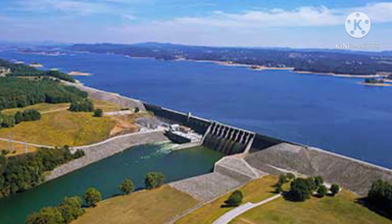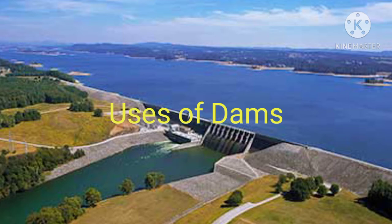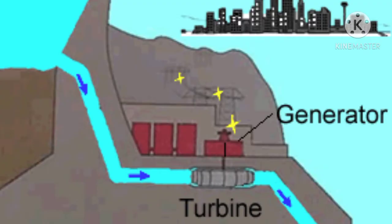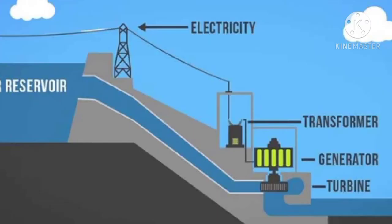Now let's see the uses of dams. Dams are used for producing electricity. Water falls from a height, which rotates the plates of a turbine to produce electricity. See here in the image how the water falls from height and is used to produce electricity. Electricity produced from the force of water is called hydroelectricity. Hydro means water.